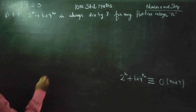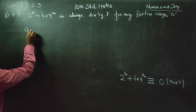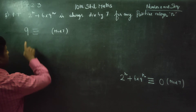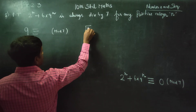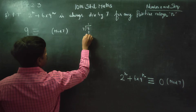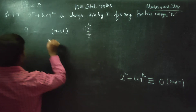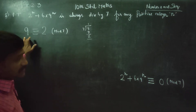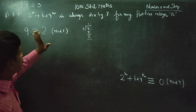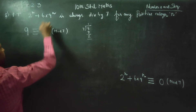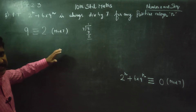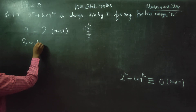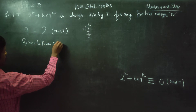First of all, I will start with 9. We know that 9 is congruent to 2 mod 7. That is, 9 divided by 7 gives remainder 2. Then, raising to the power n on both sides, 9 power n is congruent to 2 power n mod 7.